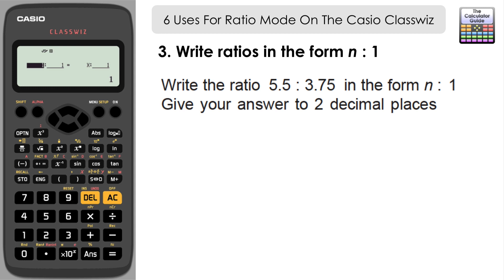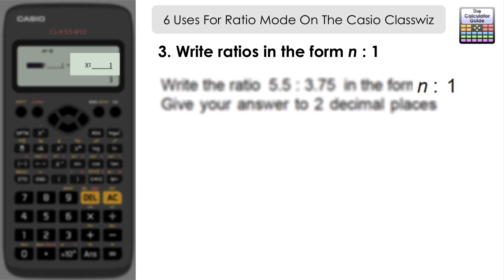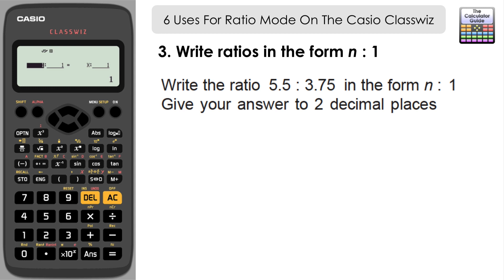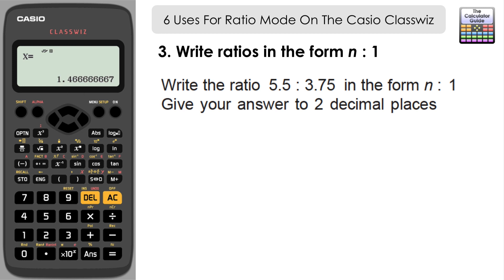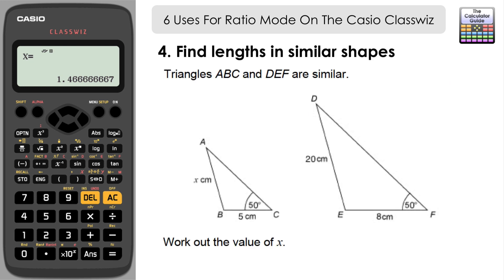The third use is writing ratios in the form n to 1. Write the ratio 5.5 to 3.75 in the form n to 1, giving the answer to two decimal places. With option one, the unknown x is on the left side of the right-hand ratio, matching the n-to-1 format. Input 5.5 and 3.75 on the left, and 1 is already the default on the right. Press equals and we get 1.47 to two decimal places.